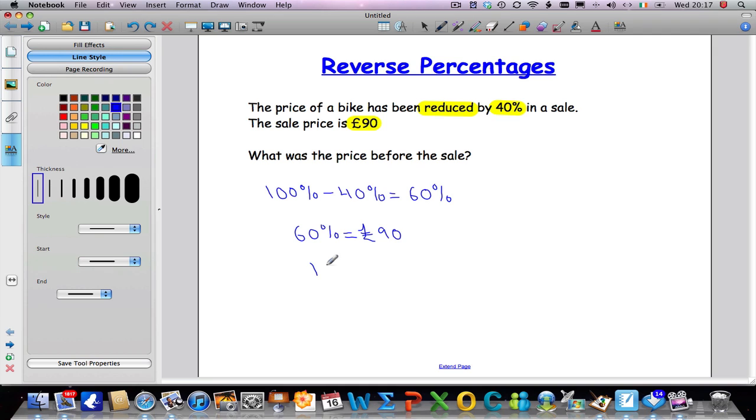Now I've got to work out what 1% is. It's always nice to know what 1% is because I can go anywhere from this number. If I want to find out what 1% is, I must divide 60% by 60. 60 divided by 60 gives me 1. If I divide this side by 60, I've got to do the exact same thing on the other side to make sure everything is balanced properly. So I'm going to divide £90 by 60, and 90 divided by 60 gives us £1.50. So I know that 1% of the original price was £1.50.